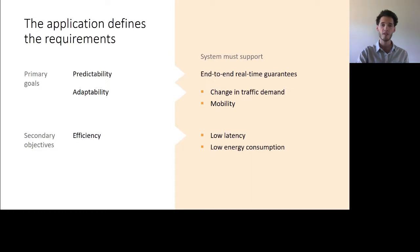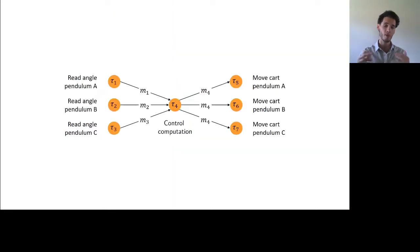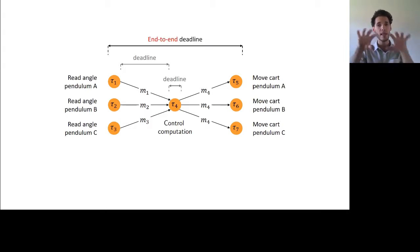One thing I would like to stress at this point is that in terms of predictability, we are actually interested in end-to-end real-time guarantees. What this means is that if we look back at our application, of course, we have to meet deadlines for each messages and tasks. But what really matters in the end is the end-to-end deadline across the entire application, which is defined as the time elapsed between the start and the end of the first and last task, respectively.